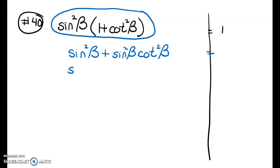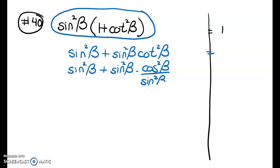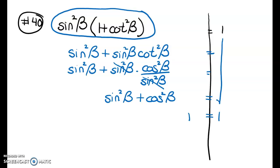Since I'm not sure what to do next, I'll rewrite everything in terms of sine and cosine. Cotangent squared is cos²/sin². The sine squareds cancel out nicely, leaving sin²β + cos²β.